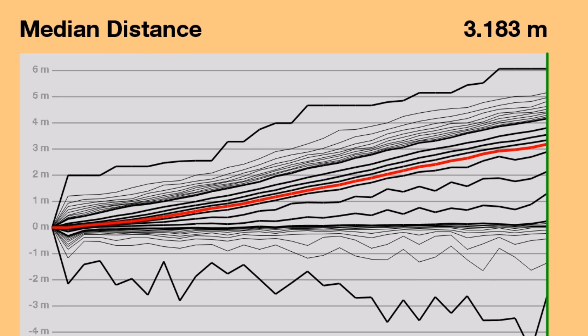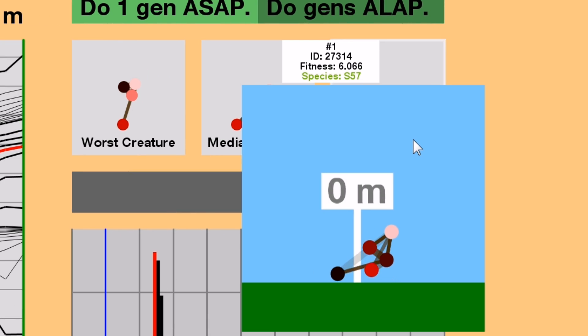The median has passed 3 meters, but the best creature has passed 6. Who is this creature? Let's see what it does.